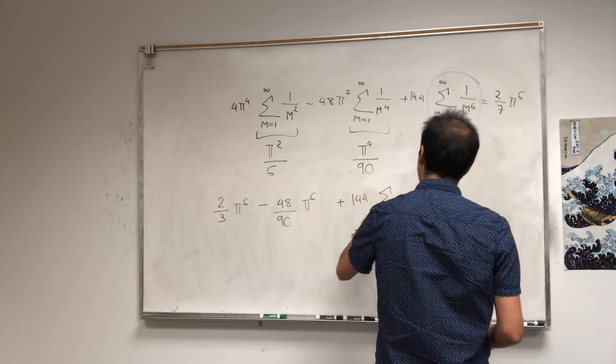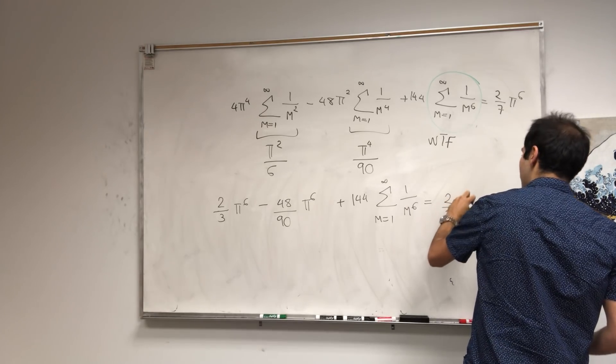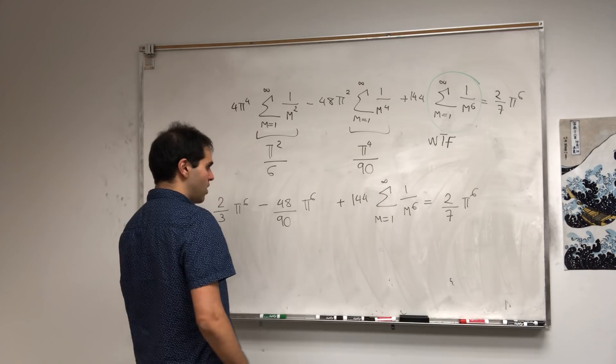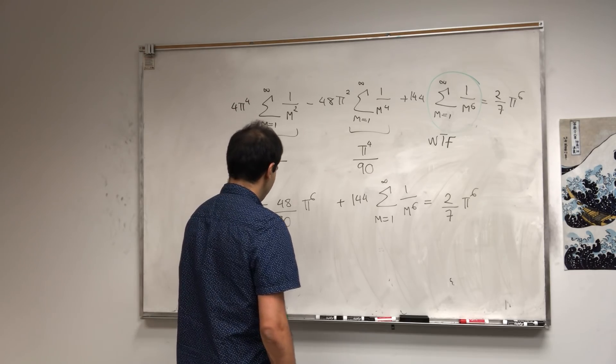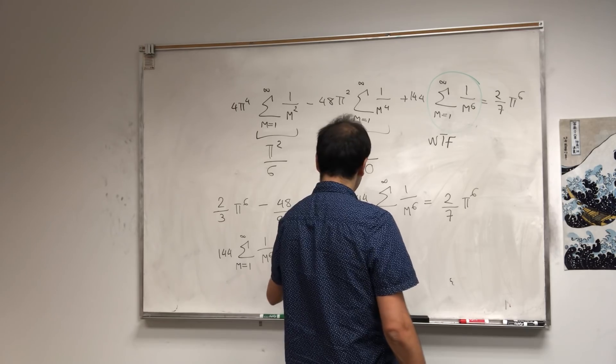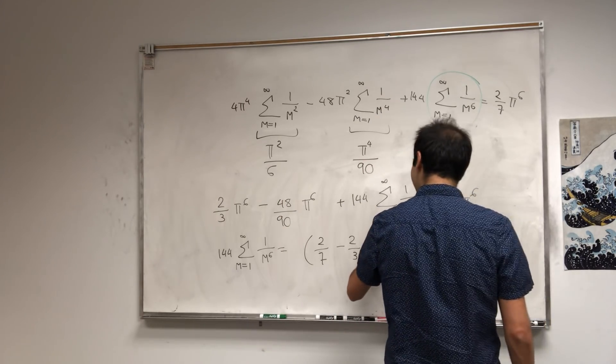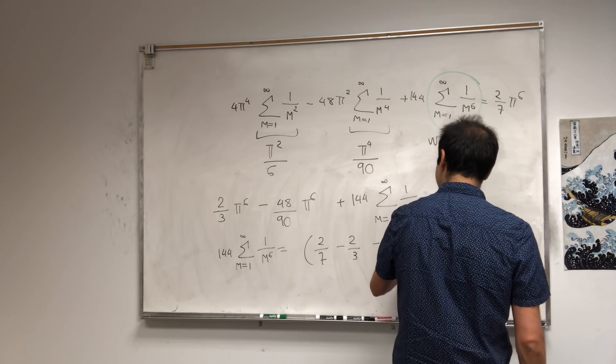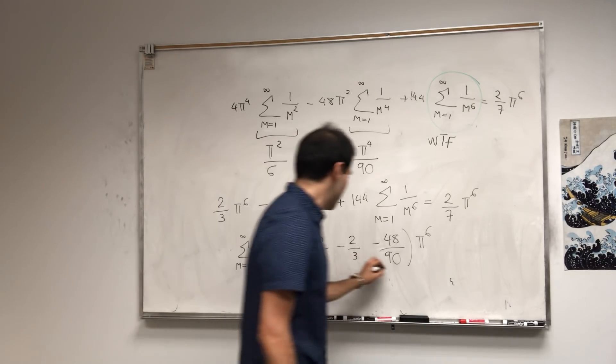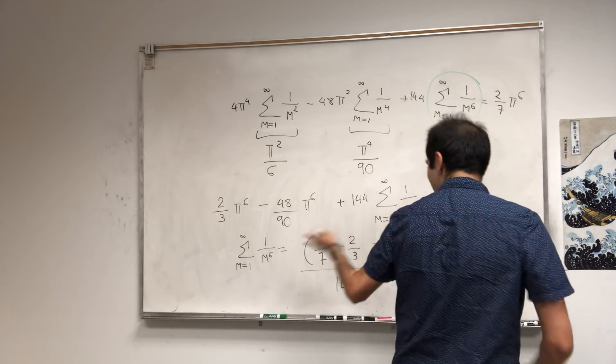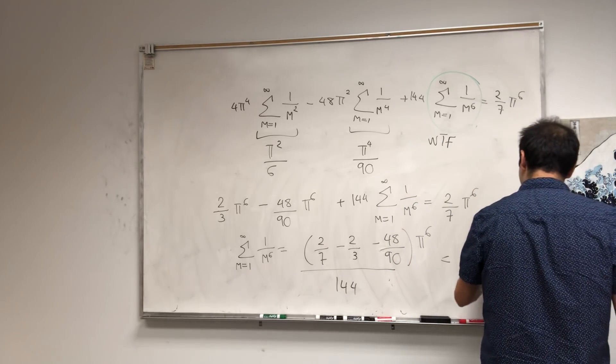Plus 144 times that sum 1 over m to the 6th equals 2 7ths pi to the 6th, which tells you what is the sum. So 144 times the sum that we want becomes 2 7ths minus 2 3rds minus 48 over 90 pi to the 6th. Doesn't matter, because we have to divide now. So let's divide by 144. And I believe if you do this horrible algebra, I hope this is correct, you get pi to the 6th over 945.